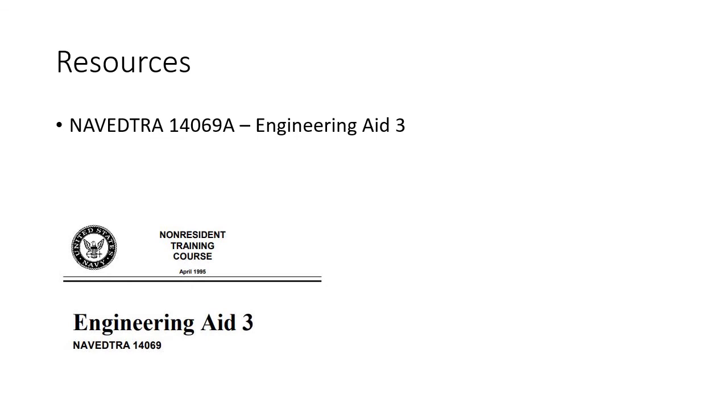Another military manual that is pretty good is NAVEDTRA 14069A, Engineering Aid. This is basically a draftsman course as far as I'm concerned. If you want to take a look at this one, do a Google search. There's a couple of places where you can find this PDF out there on the internet. It's got all kinds of information in regards to how to read drawings and blueprints and whatnot, and I think it's got some questions at the end of the chapters too. So give it a look. Sorry to the U.S. Army or the Air Force, I don't know what your jobs are or where to find the stuff. I was in the Navy, so consequently I use Navy stuff.